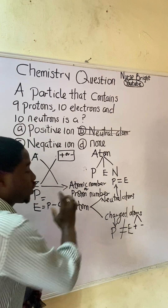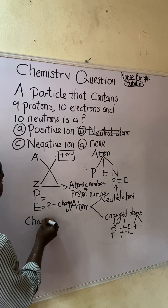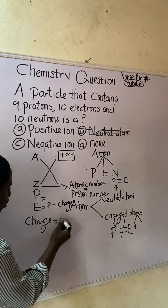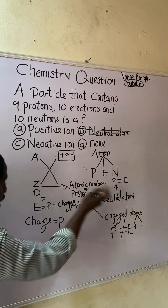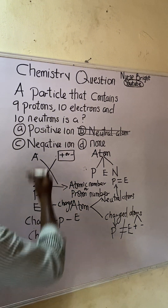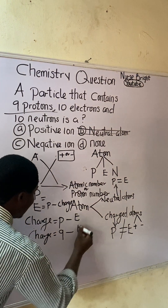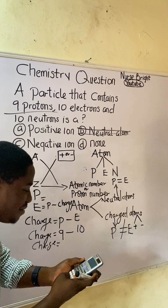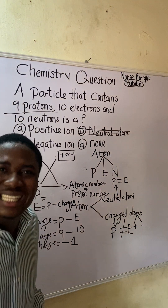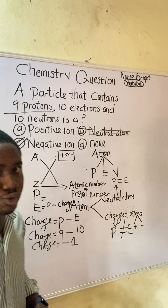To calculate the charge, we make charge the subject of the formula. So: charge equals proton number minus electron number. The proton number is nine, and the electron number is ten. Therefore, charge equals nine minus ten, which equals minus one. So this atom has a negative charge — it is a negative ion. The answer is option C.